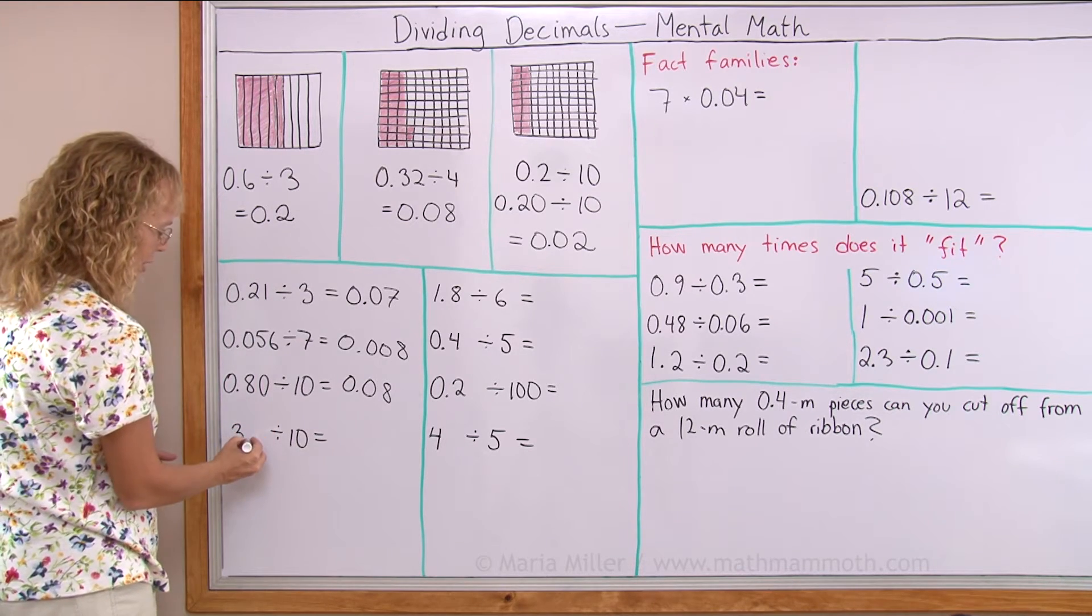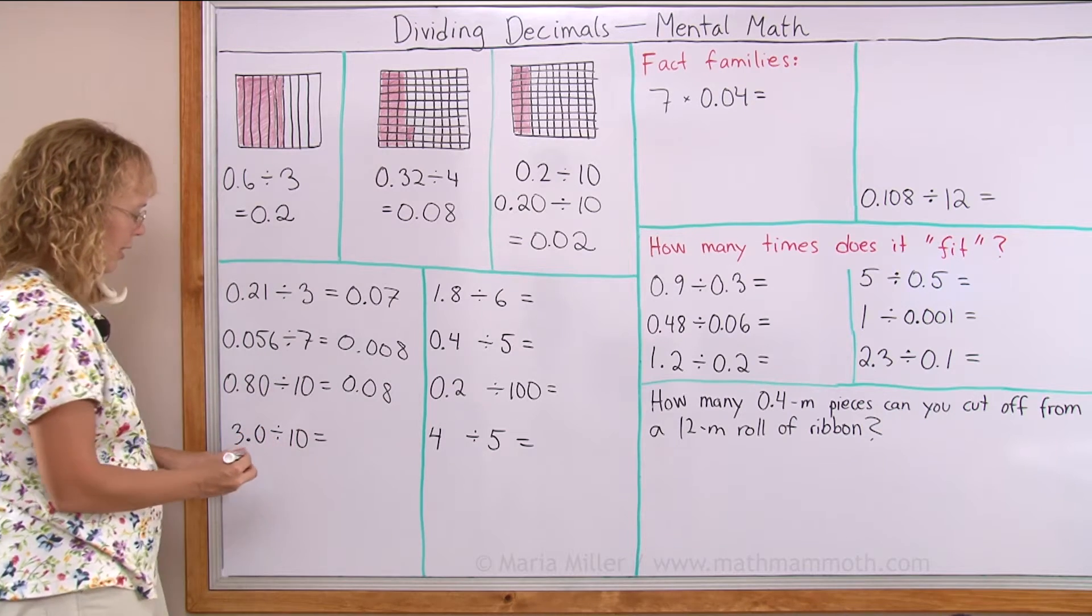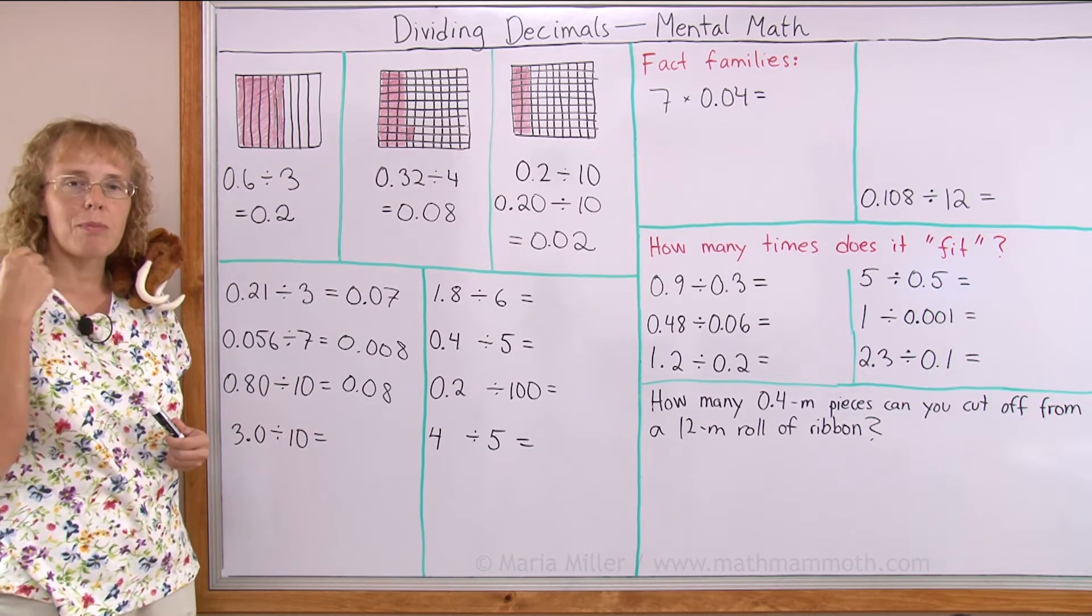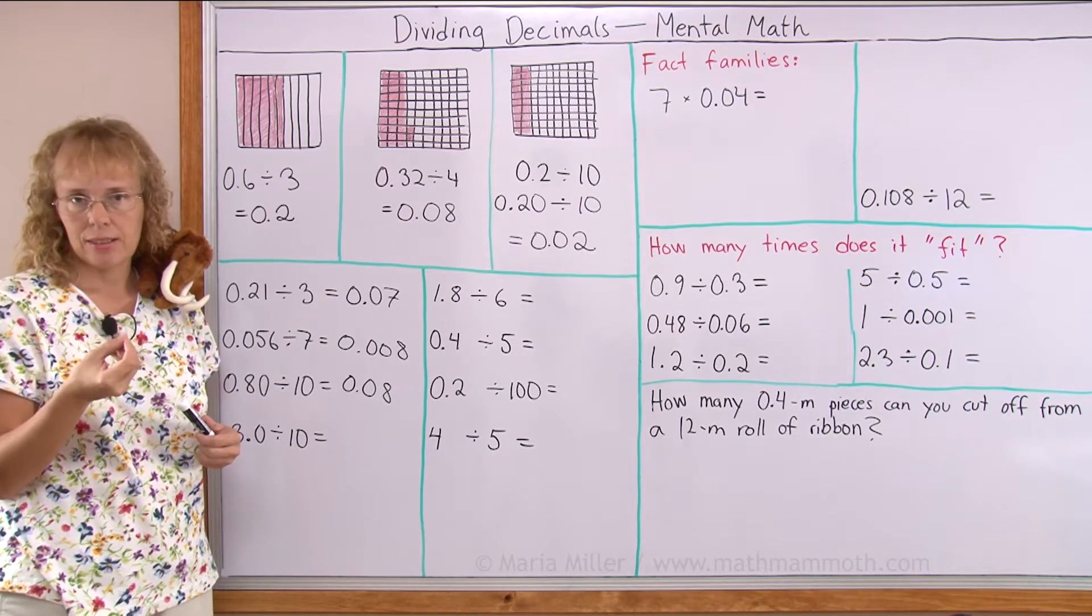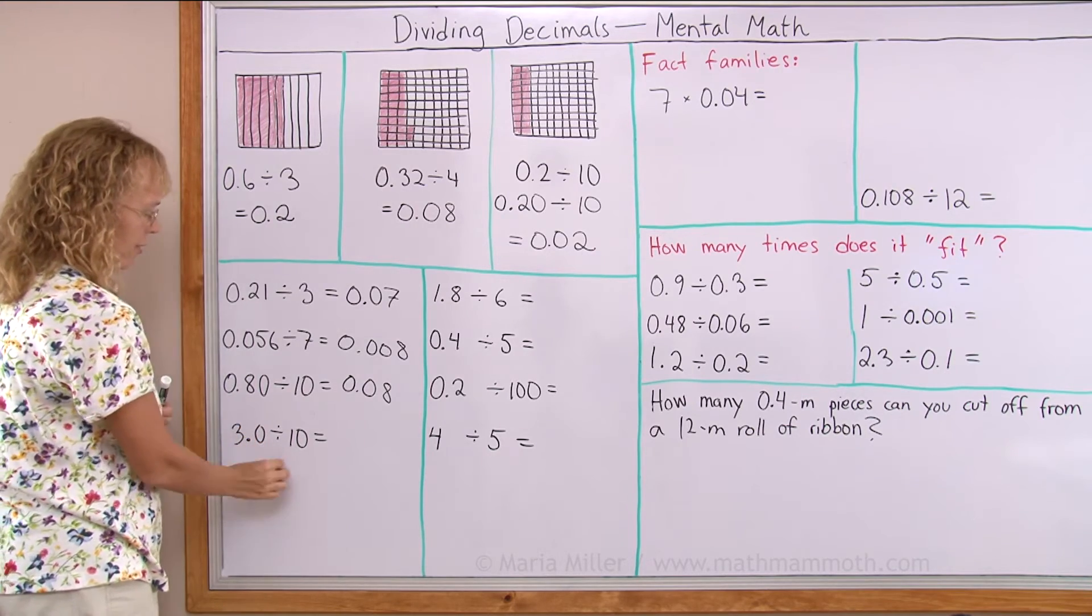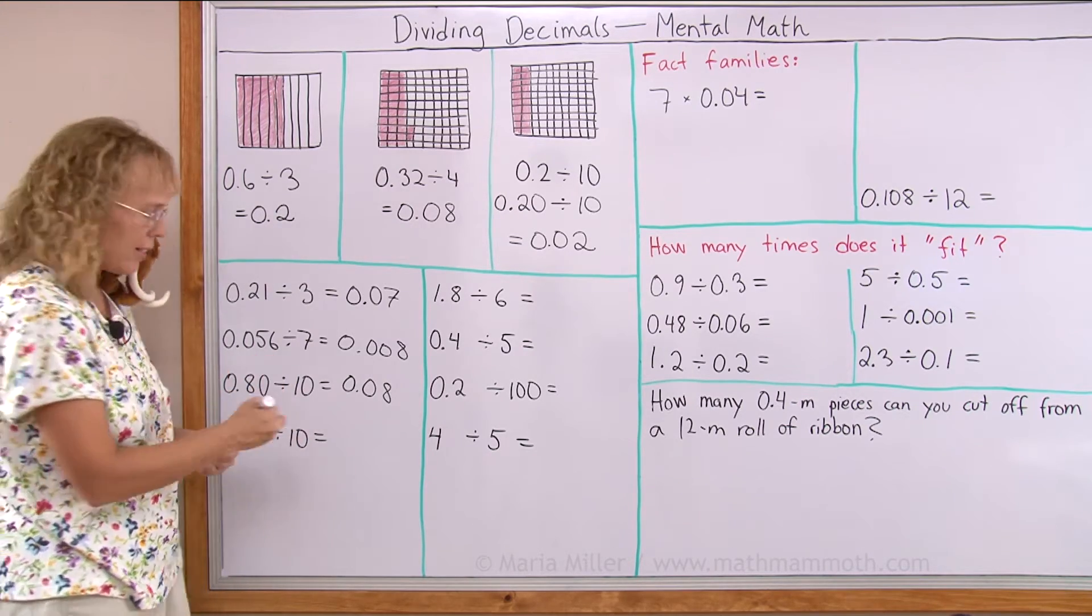Now I cannot just, I need to write it like this. Three point zero, and think of it in my mind as thirty tenths. Thirty tenths divided by ten is three tenths.